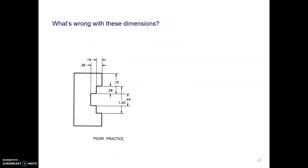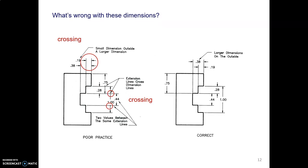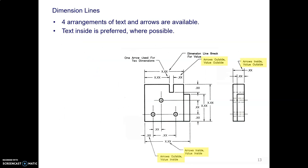What's wrong with these dimensions? They are crossing. So we avoid that by putting the smallest dimensions closest to the part.